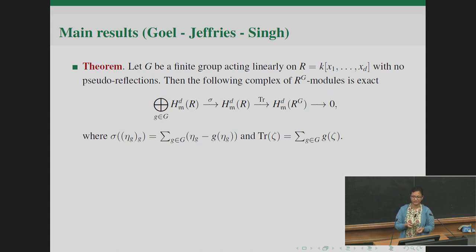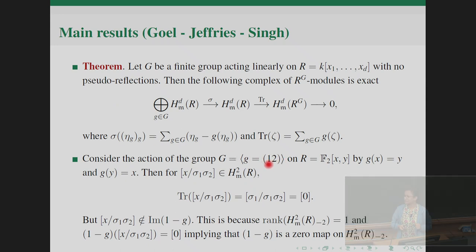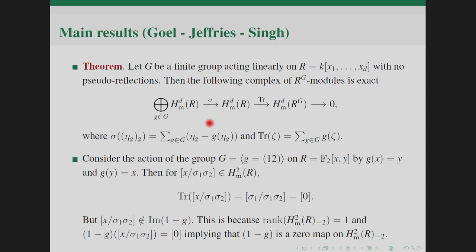An obvious question is why the assumption of no pseudo-reflections is needed — can we drop it? We cannot. Consider the group generated by the transposition (12) acting on F_2[x,y] by permuting variables. Looking at the element x/(σ_1 σ_2) in the degree −2 graded component of H^2_m(R): it maps to zero under the transfer map, so it's in the kernel, but one can check it is not in the image of the sigma map. Thus exactness at the middle stage fails when pseudo-reflections are present.